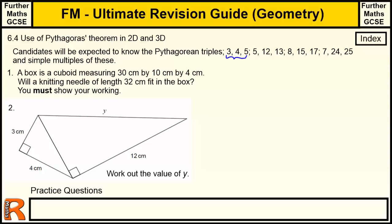6.4, the use of Pythagoras' theorem in 2 and 3D problems. This is part of my ultimate revision guide for further maths GCSE. This is in the geometry section. This index button here will take you back to the index for geometry.